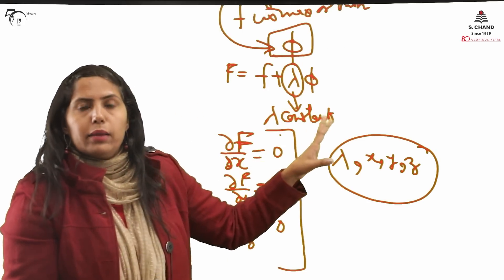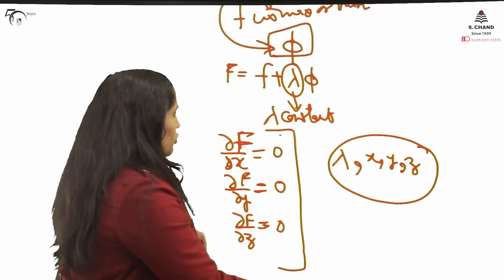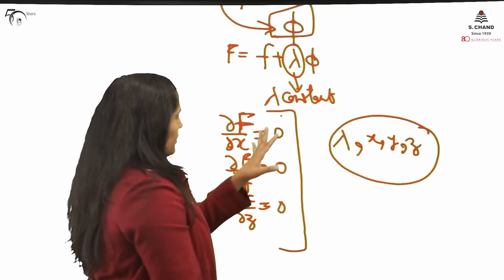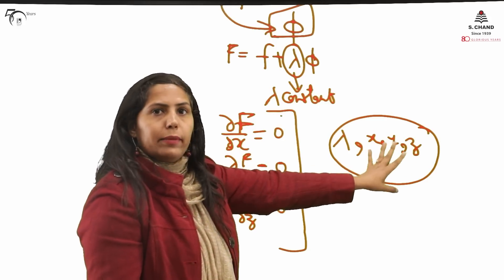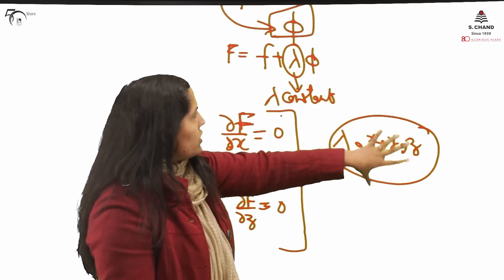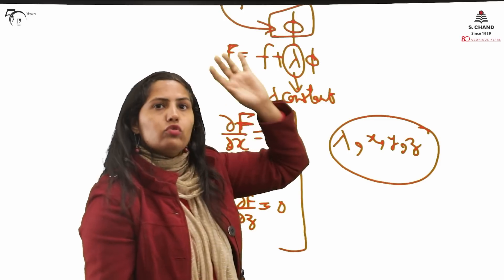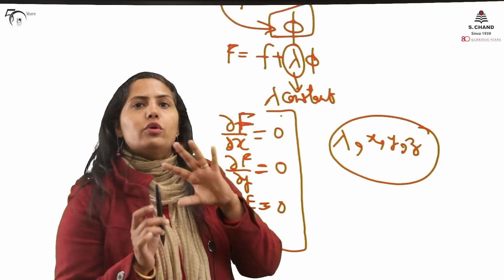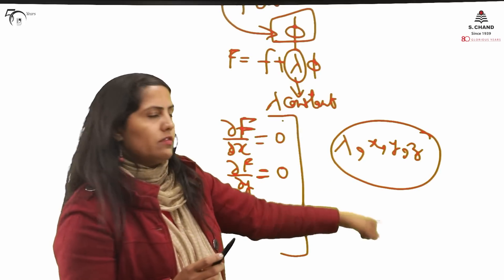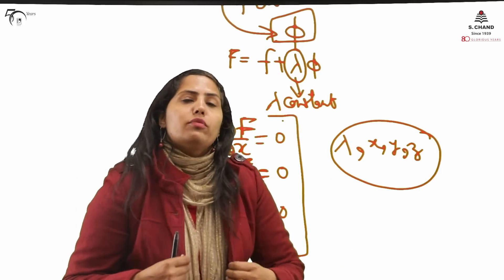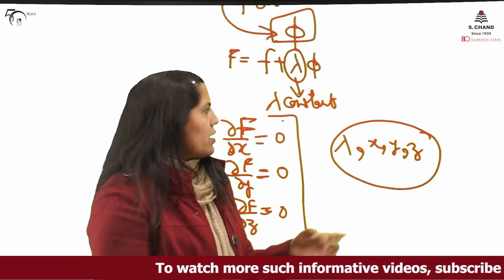I am just taking one question — with the question's help, you will get a better idea. This is the only procedure: you will equate to 0, the equation will be in lambda, x, y, z, and then with the help of phi you will put the values or do some calculation to find x, y, z without lambda — how to basically remove lambda. Lagrange method of multipliers has one drawback or loophole, which I will explain.